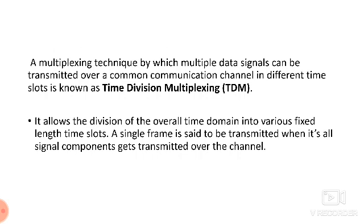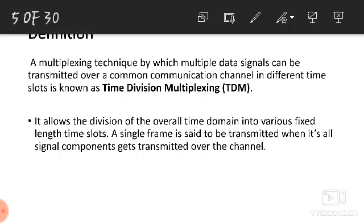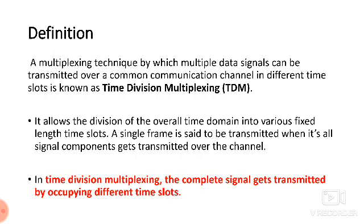In analog time division multiplexing, different time slots are assigned to different signals. Let the signals be x1(t), x2(t), x3(t), up to xn(t) — n number of signals sharing a single channel. In TDM, the complete signal gets transmitted by occupying different time slots.